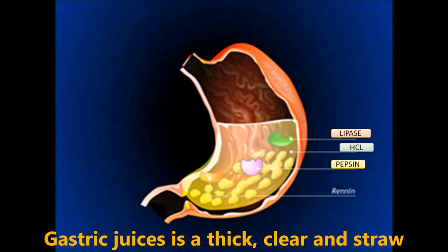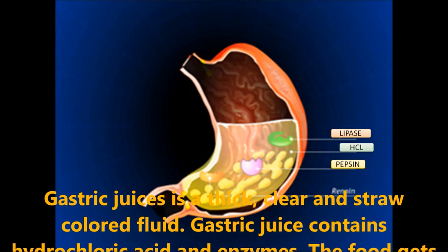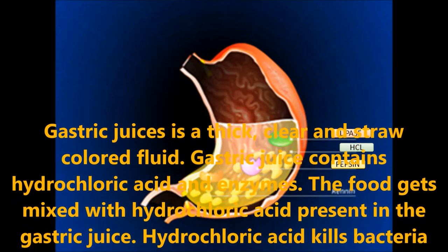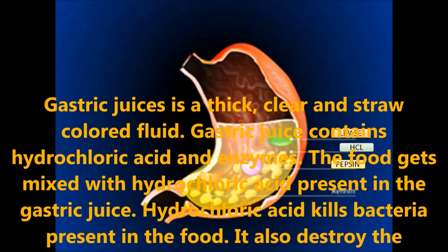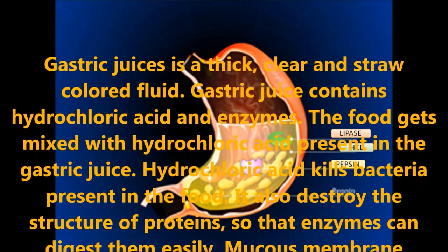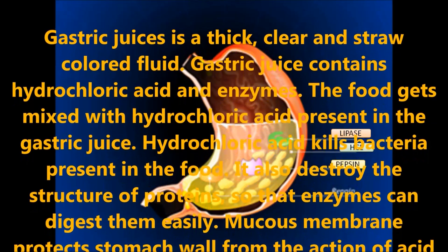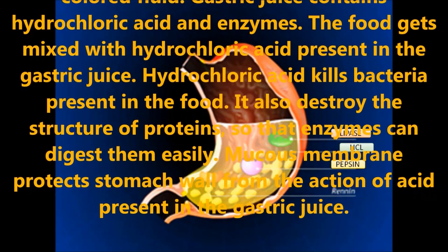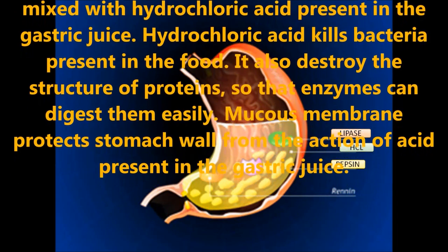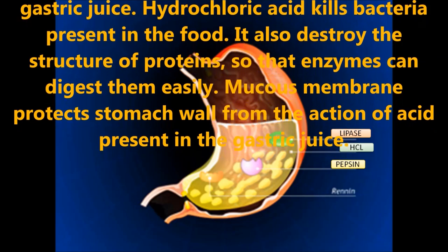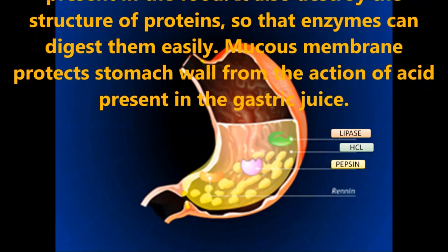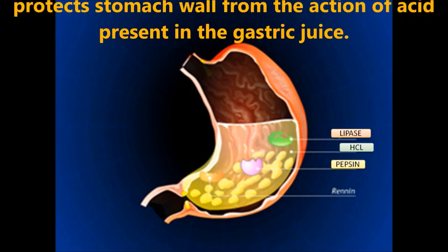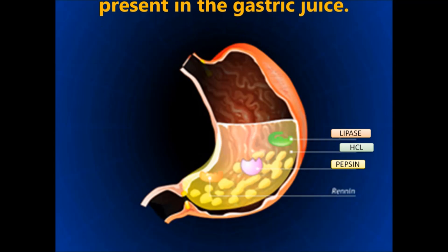The gastric juice is a thick, clear, straw-colored fluid. It contains hydrochloric acid and enzymes. The food gets mixed with hydrochloric acid present in the gastric juice, which kills bacteria present in the food and destroys the structure of proteins so that enzymes can digest them easily. The mucous membrane protects the stomach wall from the action of acid present in the gastric juice.